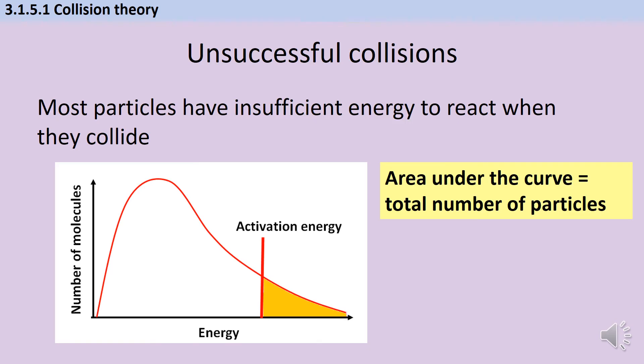This diagram here is something called a Maxwell-Boltzmann distribution which we'll look at in much more detail in the next video but for now all you need to understand is it's a typical distribution that shows you within a reaction how many particles have a certain amount of energy. The area under the curve is all the particles in a reaction and the red line represents the activation energy for this particular reaction.